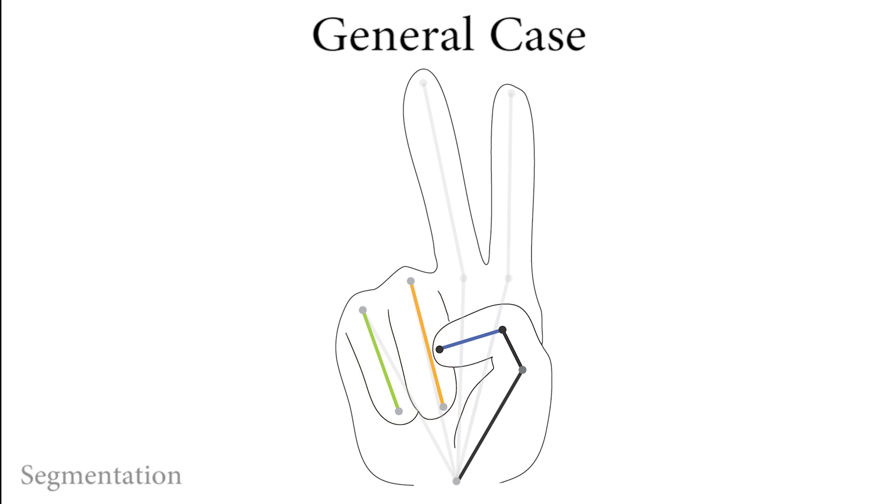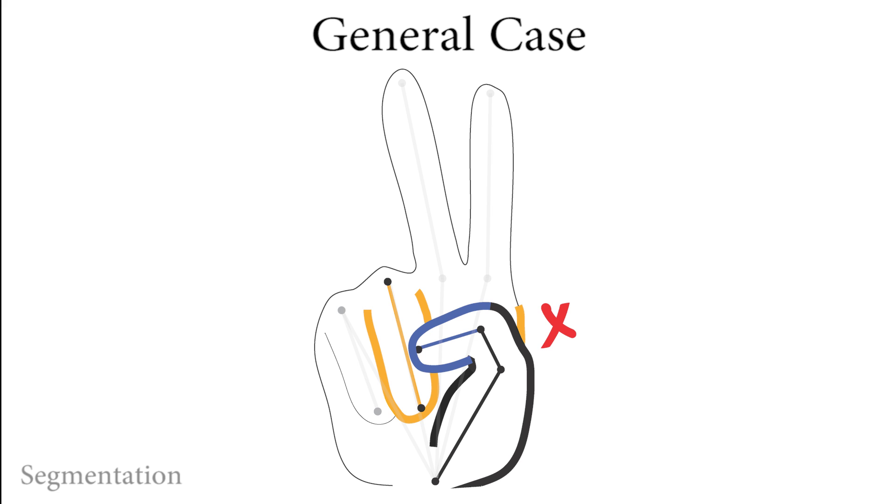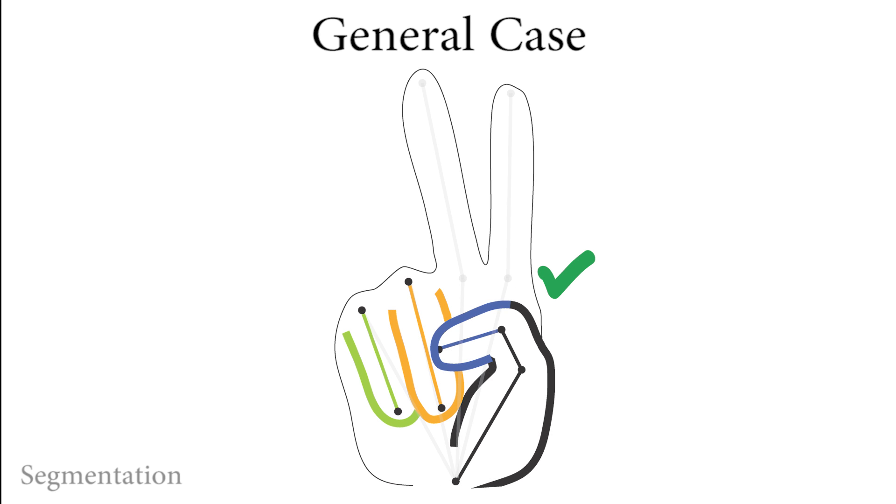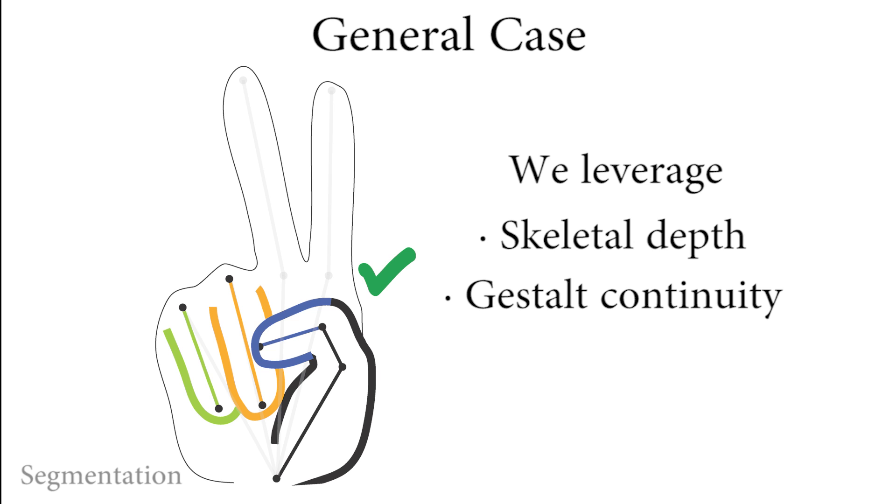In the presence of occlusions, 2D distance is not a reliable proxy for 3D distance. Occlusions result in multiple disjoint contours instead of a single one, complicating the use of topological criteria for segmentation. We overcome these challenges and compute perceptually correct segmentations by using the depth information provided by the 3D skeleton to better estimate proximity and gestalt continuity to analyze disjoint contours.